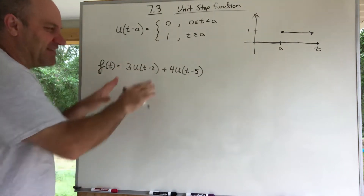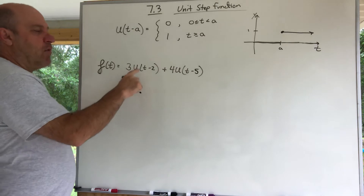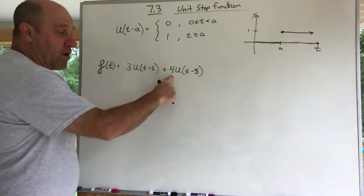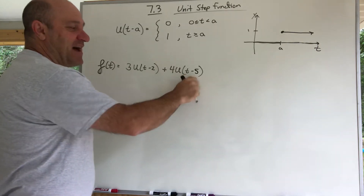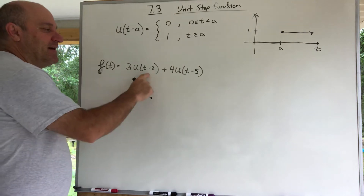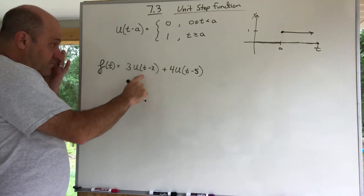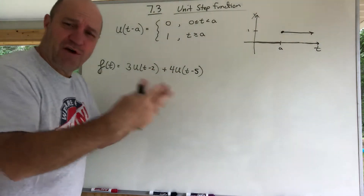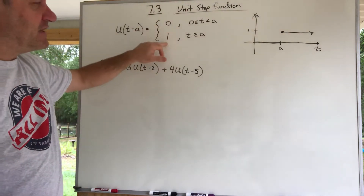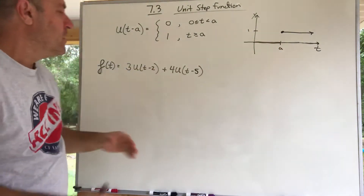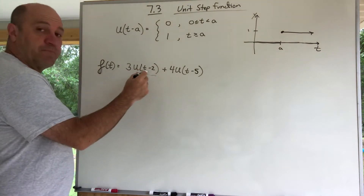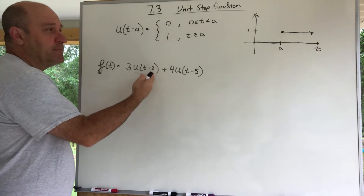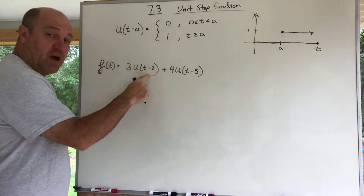Look at this example: 3 multiplied by the unit step function u(t - 2), added to 4 multiplied by the unit step function u(t - 5). Remember, it starts off at zero and then gets turned on to be a one. So this term is zero when t is less than 2, and once you hit 2 it gets turned on and becomes a one — multiplied by 3, that's a 3.